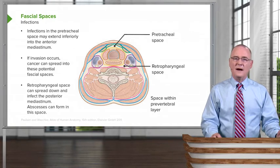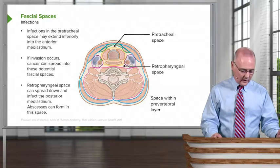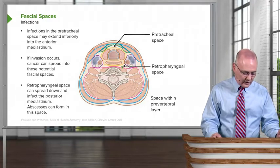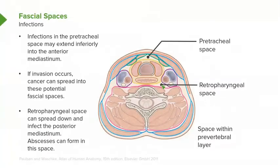A third and final consideration is with respect to the retropharyngeal space. If there's an infection here, it can spread inferiorly and infect the posterior mediastinum, and that could then form an abscess in this particular retropharyngeal space as a result.